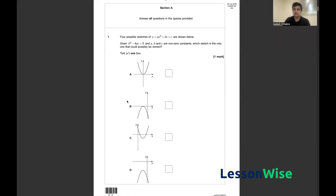We have to choose which one of these sketches could be the only correct representation of ax squared plus bx plus c. To do this, we have to utilize the two bits of information that have been given in the question.